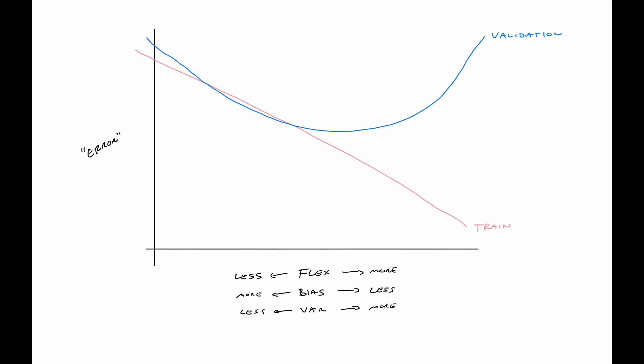Returning to this flexibility vs. error picture: if we were fitting k-nearest neighbors and trying different k values, we'd pick some optimal amount of flexibility where validation error is minimized. On the high-flexibility side we're more likely to be overfitting — training error looks great but validation error is poor. On the low-flexibility side, this is likely underfitting — increasing flexibility a little would give better validation error.